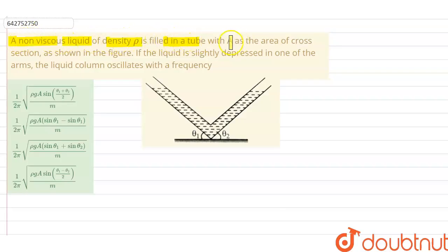A non-viscous liquid of density ρ is filled in a tube with area of cross-section A, as shown in the figure. If the liquid is slightly depressed in one of the arms, the liquid column oscillates with a frequency. We have to find the frequency of oscillation.